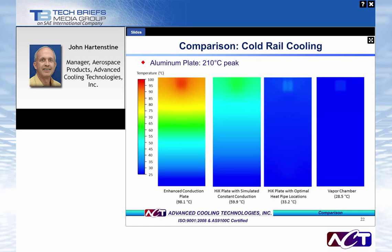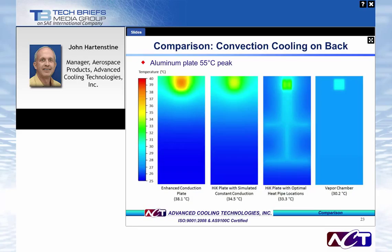For the convection cooling case, a similar progression in thermal performance is seen across the different cooling technologies. The optimized high-K plate design shows thermal patterns from the heat pipes spreading the thermal load across the plate surface, improving convection-side heat transfer. The vapor chamber shows further improvements over the high-K plate as a result of 2D spreading.